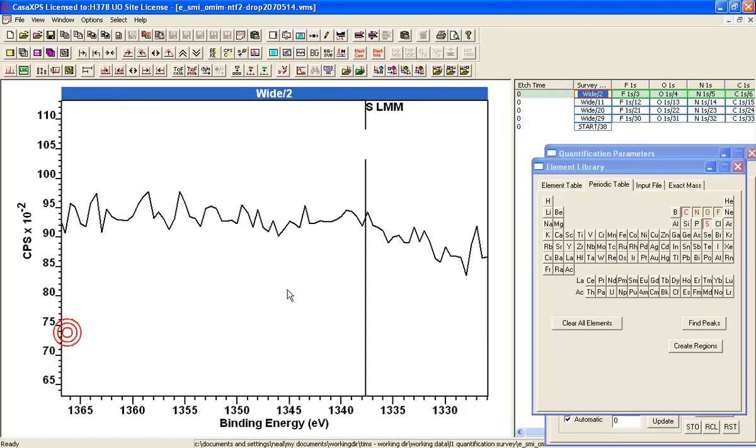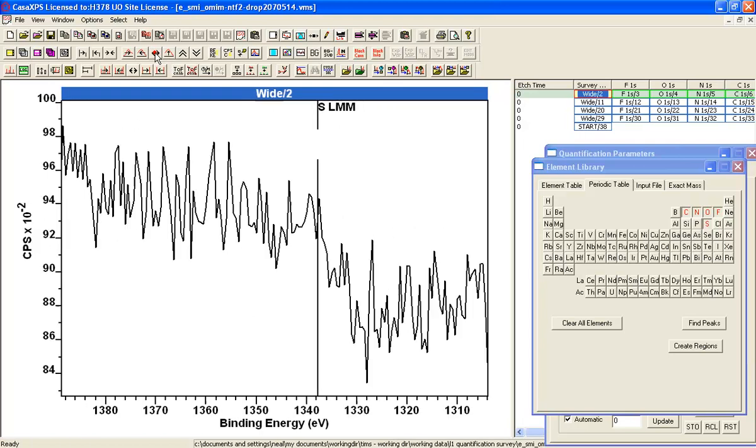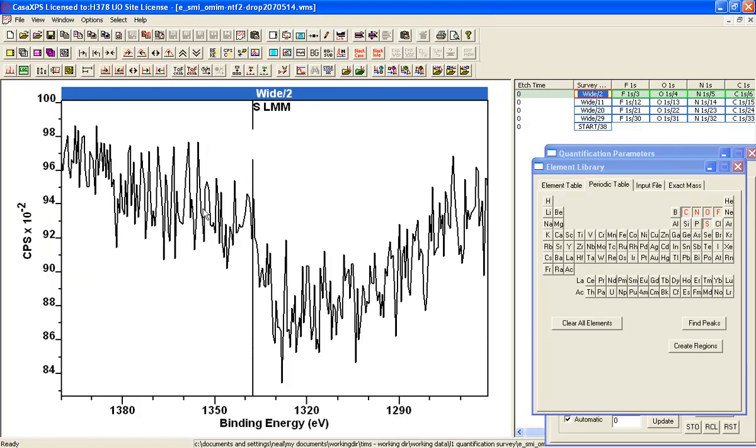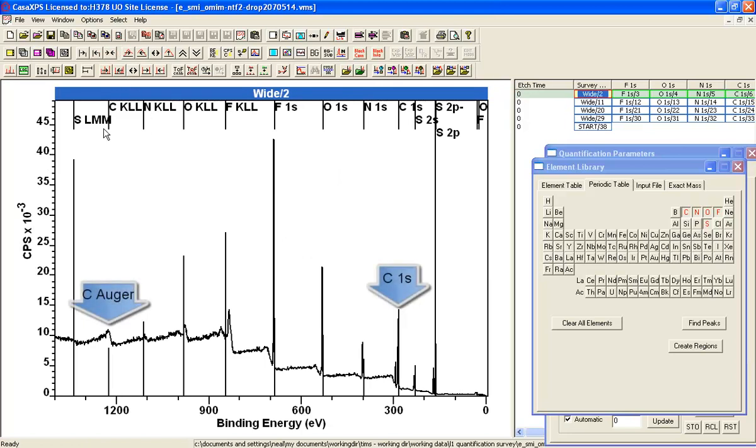Let's just verify there is some structure there. Yes, that looks like we've got some kind of Sulphur structure. So that matches the Sulphur-Auger line. And you can clearly see a Carbon, Nitrogen, Oxygen and Fluorine that all correspond to the photoelectron transitions. Fluorine 1S, Oxygen 1S, Nitrogen 1S and Carbon 1S with a Sulphur 2P is the one that we're going to use to quantify.